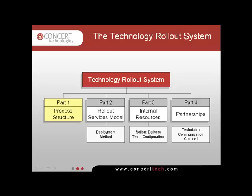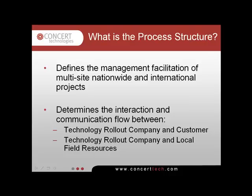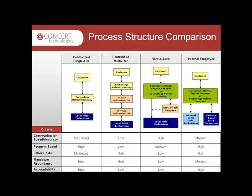Subsequent parts of the Technology Rollout System are detailed in additional videos in our series. The Process Structure defines the management facilitation of multi-site, nationwide, and international projects. It determines the interaction and communication flow between the Technology Rollout Company and their customer, as well as between the Technology Rollout Company and their local field resources. This information is based on a Technology Rollout Company's management and technical support of on-site field technicians, which includes the dissemination of requirements and relay of technical knowledge for multi-site, multi-service technology rollouts. There are five primary process structures used for nationwide and international technology rollouts.